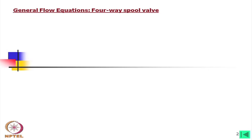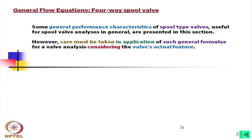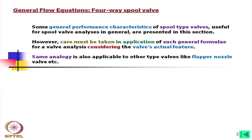First of all, we shall develop general flow equations. We have considered a four-way spool valve. Some general performance characteristics of spool-type valves, useful for spool valve analysis in general, are presented in this section. Care must be taken in applying such general formulas considering the valve's actual features. The same analogy is also applicable to other valve types like flapper-nozzle valves.